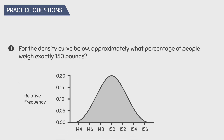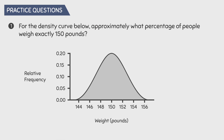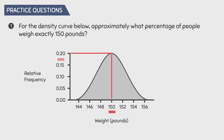Now let's do some practice questions. Feel free to pause the video to try these for yourself. Question number 1: for the density curve below, approximately what percentage of people weigh exactly 150 pounds? A common mistake students make is they see 150 on the graph, draw a line, and see that it lines up with 0.20, so they say the answer is 20%.